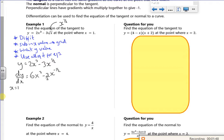When x is 1, my gradient of my tangent will be 6 lots of 1 squared minus 3 over 2 x to the power minus a half. If you stick that in your calculator, it's 4 over 2 there. It should give you 9 over 2.